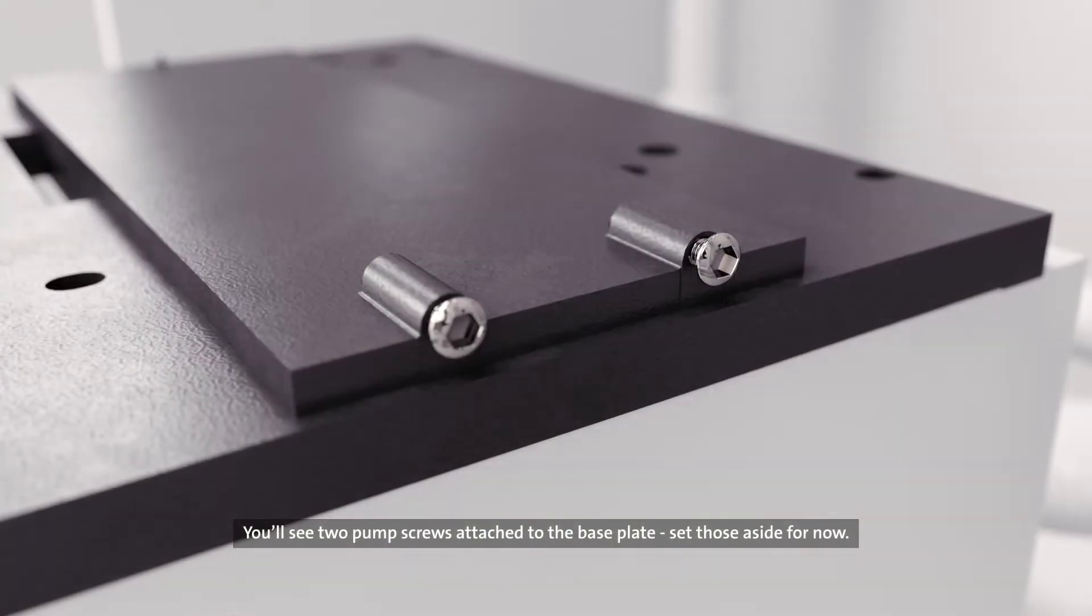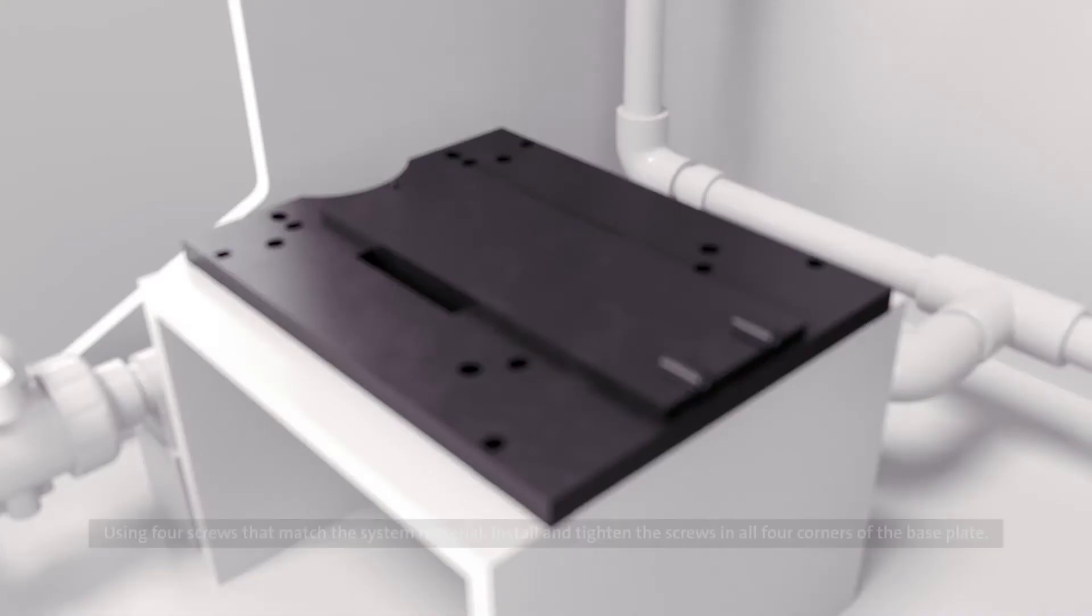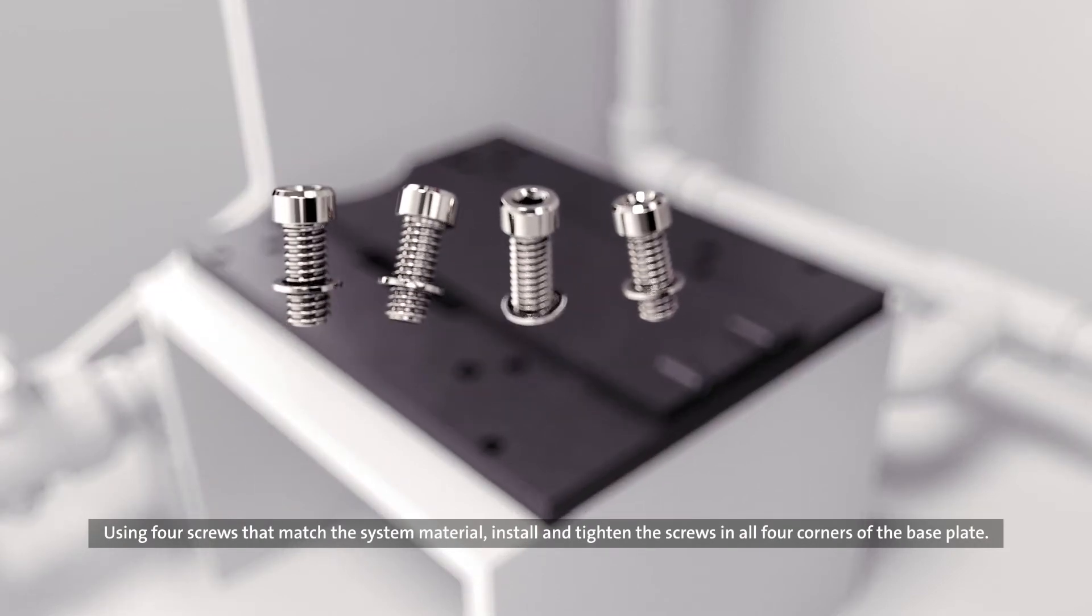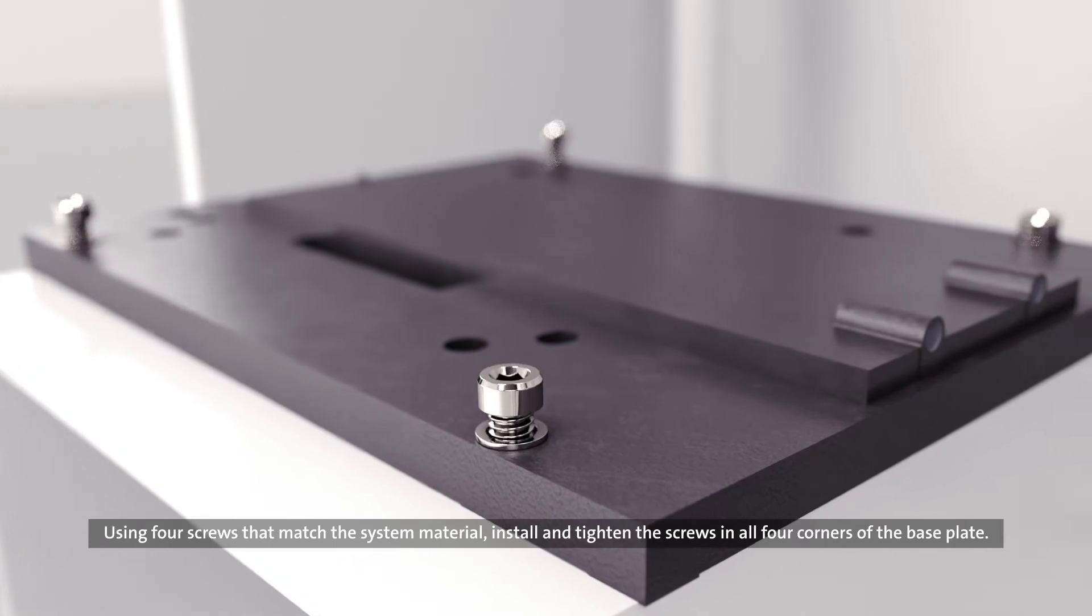You'll see two pump screws attached to the base plate. Set those aside for now. Using four screws that match the system material, install and tighten the screws in all four corners of the base plate.